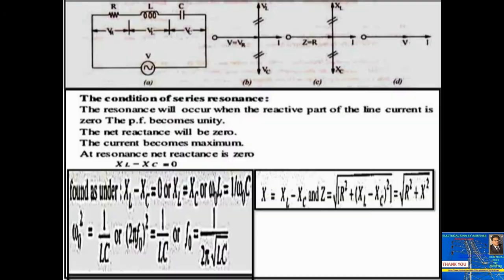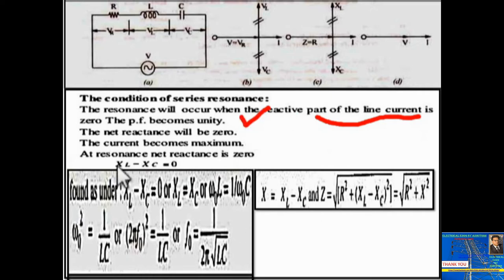The condition of series resonance: resonance will occur when the reactive part of the line current is 0 and the power factor becomes unity. The net reactance will be 0 and current becomes maximum. At a particular frequency called the resonant frequency, the net reactance XL equals XC.